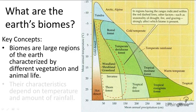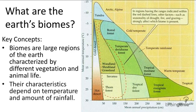Remember when we talked about ecological succession? We learned that the organisms in the final climax community are determined by the climate. Applying that to biomes, the organisms in a biome are determined by the biome's climate. As a result, biomes are easily categorized by temperature and precipitation patterns.